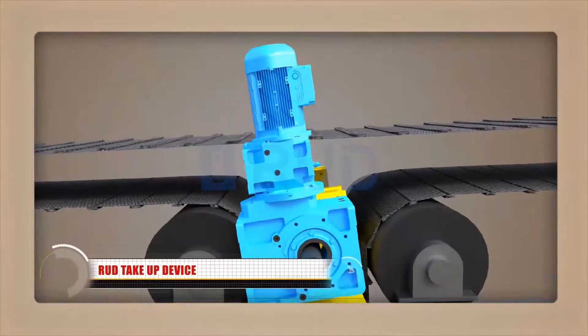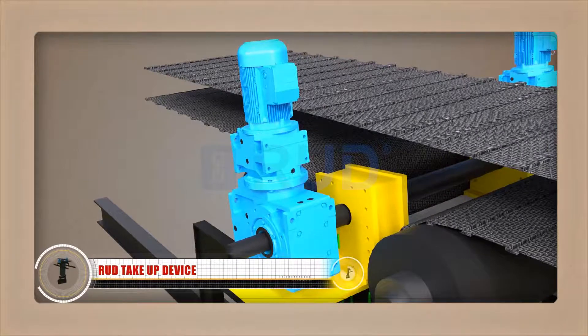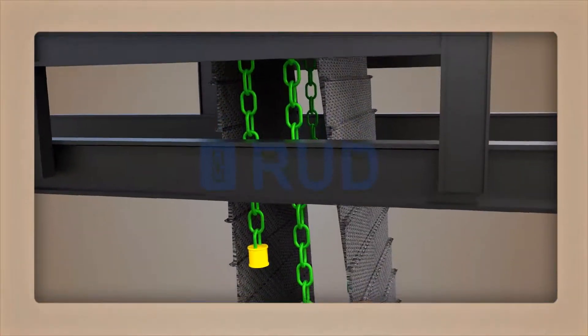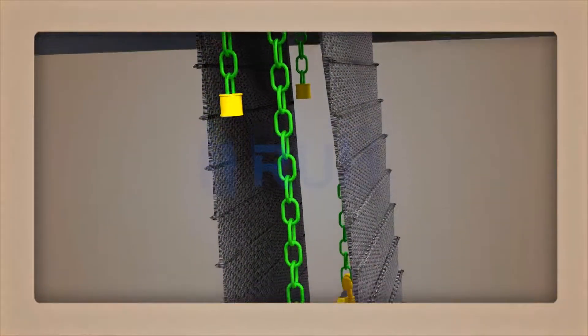To ensure optimum belt performance, Road India's innovative take-up device creates and maintains adequate pre-tension for functioning of conveyor belt under all running conditions.